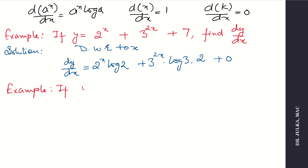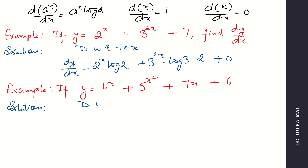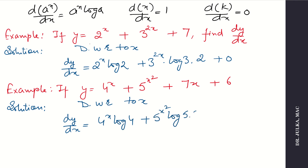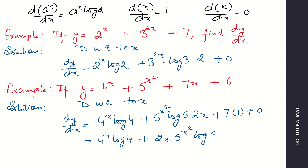Next example: differentiate y equals 4 to the power x plus 5 to the power x square plus 7x plus 6. Differentiating with respect to x: derivative of 4 to power x is 4 to power x times log 4. Plus derivative of 5 to power x square is 5 to power x square times log 5, multiplied by derivative of x square which is 2x. Derivative of 7x is 7, and derivative of constant 6 is 0. So the answer is 4 to power x log 4 plus 2x times 5 to power x square log 5 plus 7.